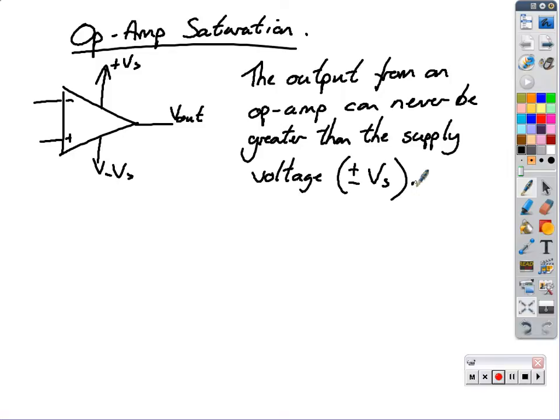So if the gain of the op-amp means that the output would normally be above the voltage supply, then the op-amp will saturate at the voltage supply level.